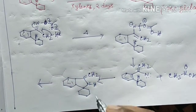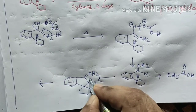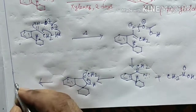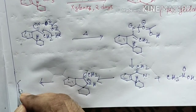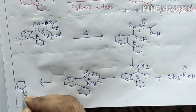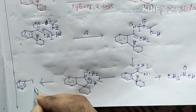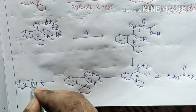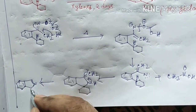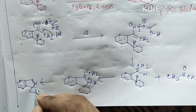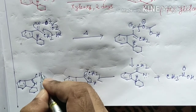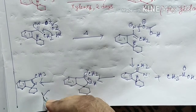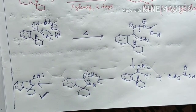The intermediate can then tautomerize to form the desired final cyclic product.